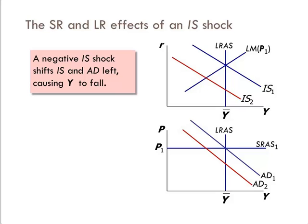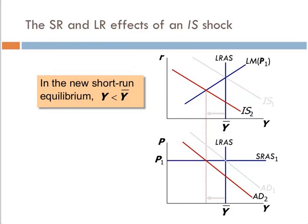In the short run, what happens? The effects of the IS shock are to decrease output. They don't change price level. Why don't they change price level? Because price level is stuck. So all it does is lower output.